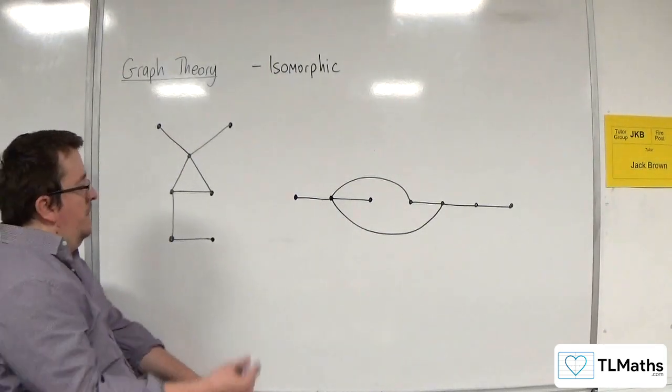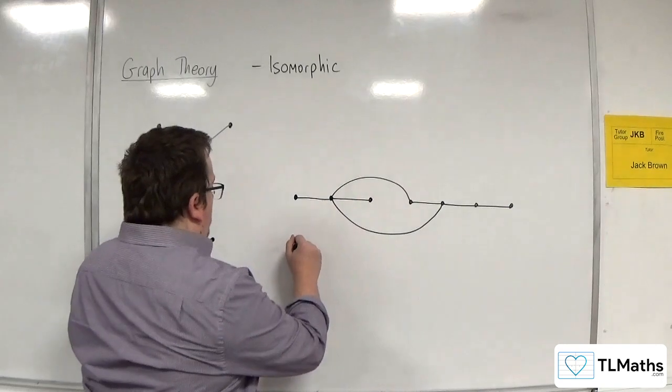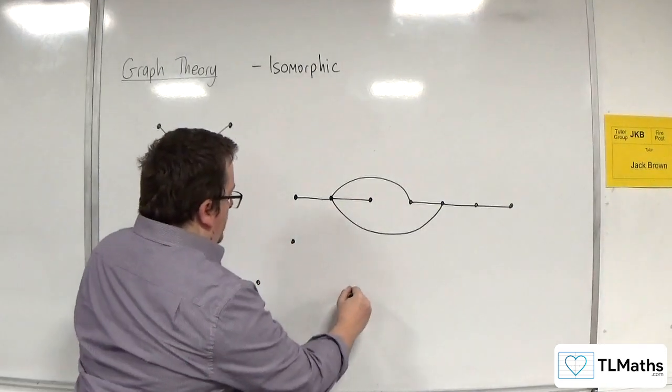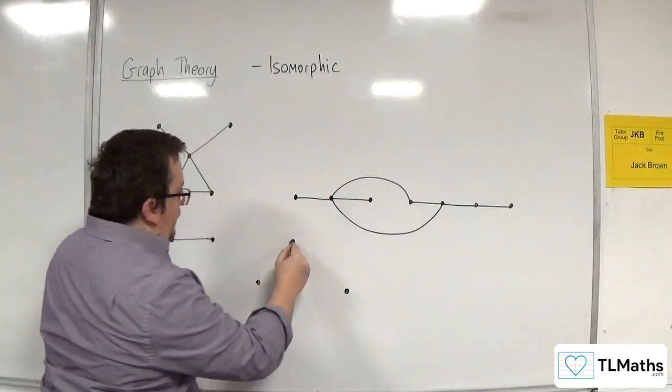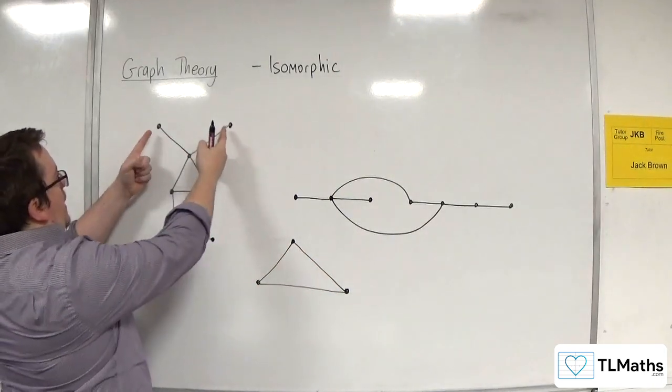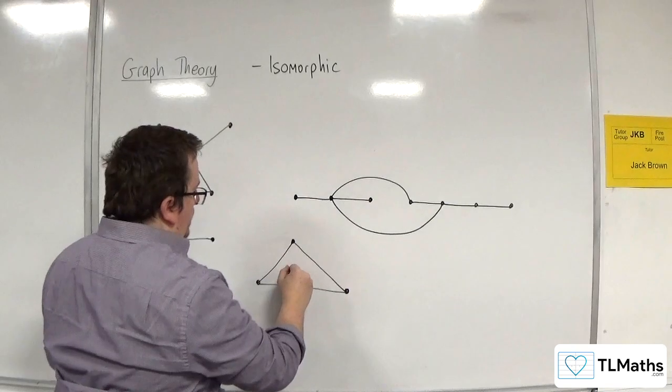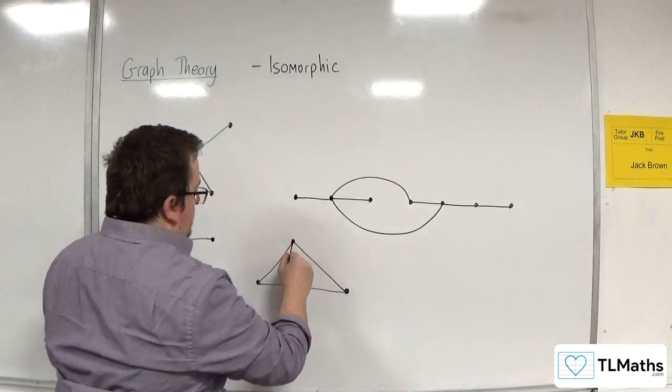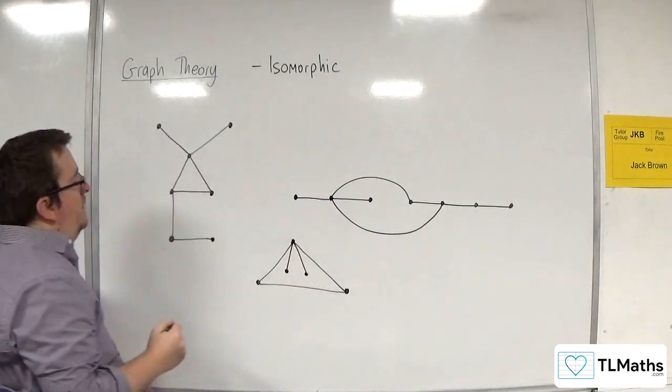Now, I can draw that, again, in a completely different way. So I could have that inside triangle still. So let's have that triangle. But I could have those two points in here. I could do that.